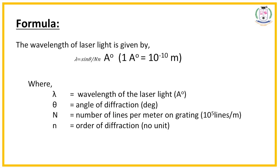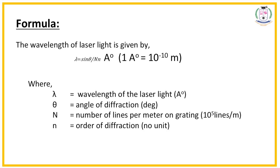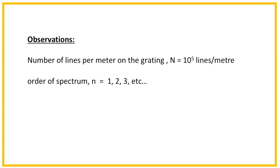The formula used to calculate the wavelength of given laser light is: λ = sin θ / (N × n), with the unit in angstroms. Here λ is the wavelength of the laser light, θ is the angle of diffraction in degrees, N (capital) is the number of lines per meter on the grating — here we have 10⁵ lines per meter — and n (small) is the order of diffraction, which has no unit. In the observations, N = 10⁵ lines per meter and the order of spectrum n = 1, 2, 3 for corresponding orders.